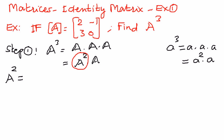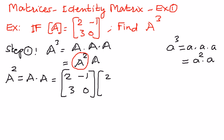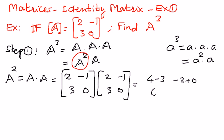A to the power of 2, I can write as A times A. Matrix A is given as 2, negative 1, 3, 0. We multiply it by itself: 2, negative 1, 3, 0. When we expand it out: 2 times 2 is 4, negative 1 times 3 is negative 3; 2 times negative 1 is negative 2, negative 1 times 0 is 0; 3 times 2 is 6, 0 times 3 is 0; 3 times negative 1 is negative 3, 0 times 0 is 0.